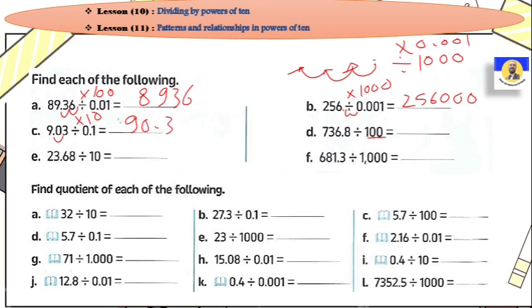Divided by 100: يبقى نعمل go back two digits — one, two. So it will be 7.368. The next: divided by 10, so go back one digit. It will be 2.368.